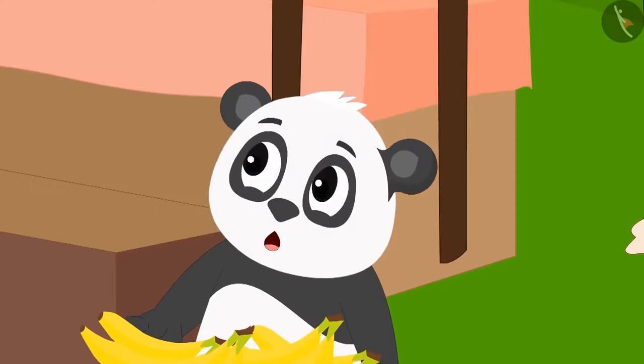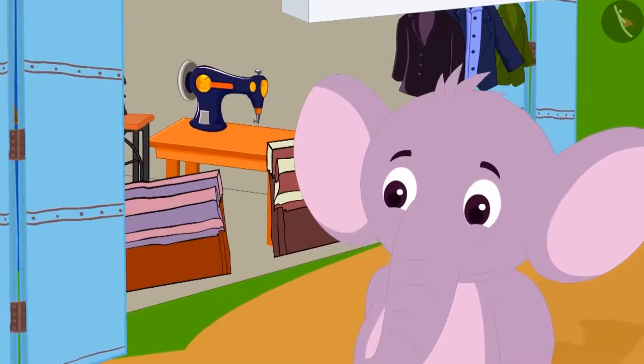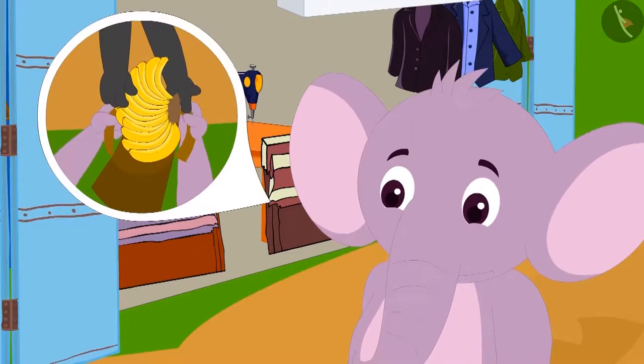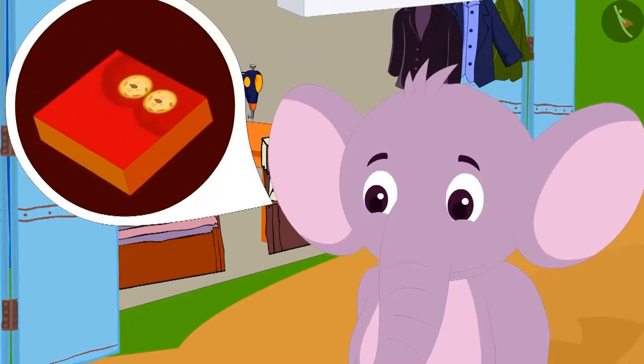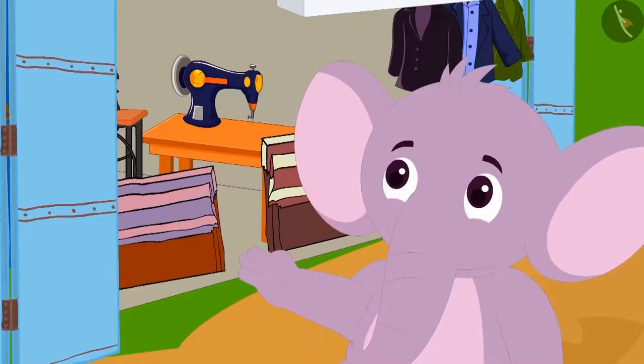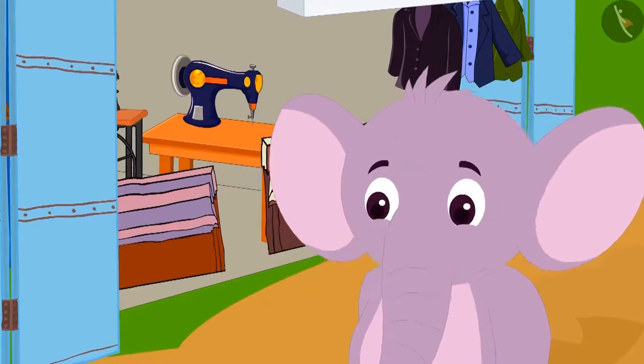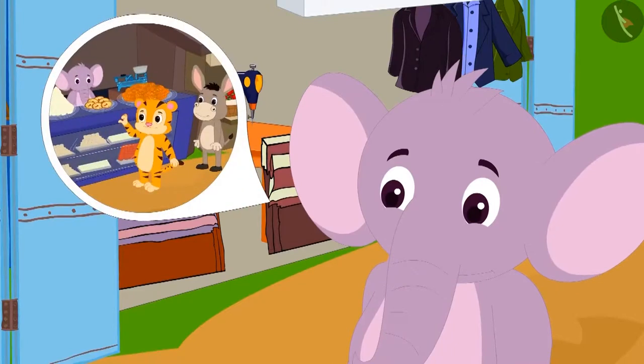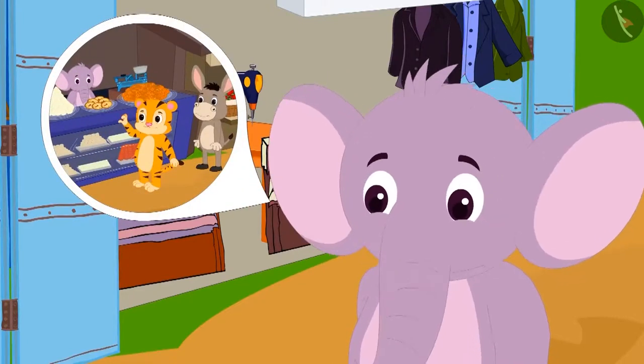Golu was confused. Then, Appu told him that he had made a sweet from the twelve bananas that he bought from Golu. And everyone liked the sweet a lot. And now, there are so many people visiting his shop today.